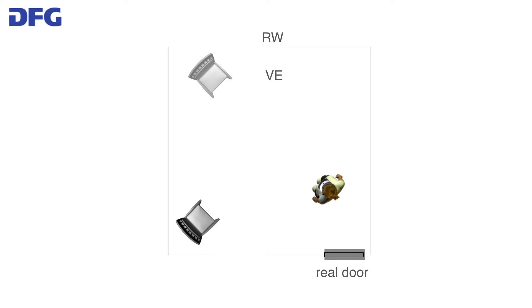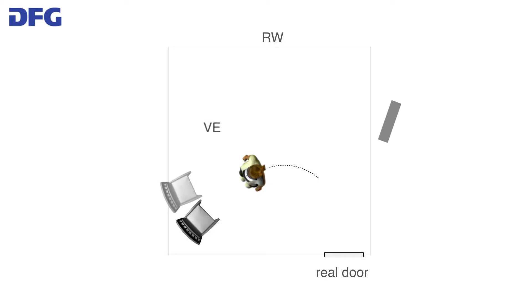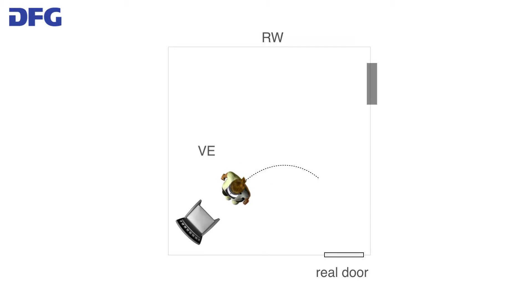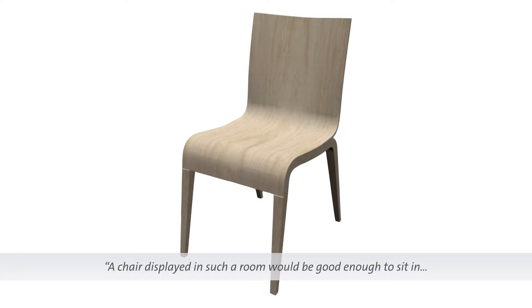My group has worked for a decade on allowing users to walk through arbitrarily large virtual environments while confined to a small physical space. The key insight: if we can predict that a user wants to walk toward a virtual object, instead of a one-to-one mapping, we can slightly rotate the virtual environment around the user. The user then walks a circular path in the real world while believing they walk a straight path in the virtual environment — and the virtual chair becomes co-located with a physical chair they can actually sit on.